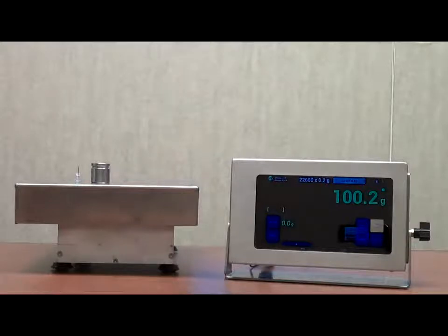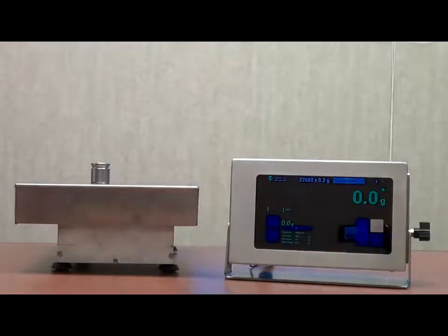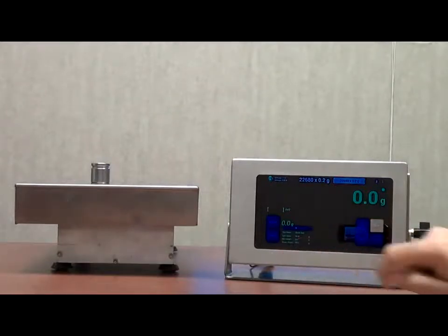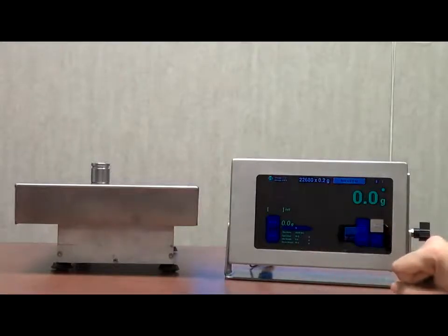There is a tear function, wherein we can remove the weight of an item that's already on the scale. I'm going to demonstrate that now. Go to tear, and now it's stabilized. So even though there is a weight on there, it is not registering because we teared the weight out. We have the tear name that we can assign and the values in the drop down menu.